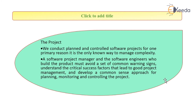Finally, the fourth P is the project. We conduct planned and controlled software projects for one primary reason — it is the only known way to manage complexity. A software project manager and the software engineer building the product must avoid a set of common warning signs, understand the critical success factors that lead to good project management, and develop a common sense approach for planning, monitoring, and controlling the project. The project is the most important thing which has to be evaluated and understood by the project manager and engineers, to ignore unnecessary details and focus on the warning signs and critical success factors that lead to good quality software.